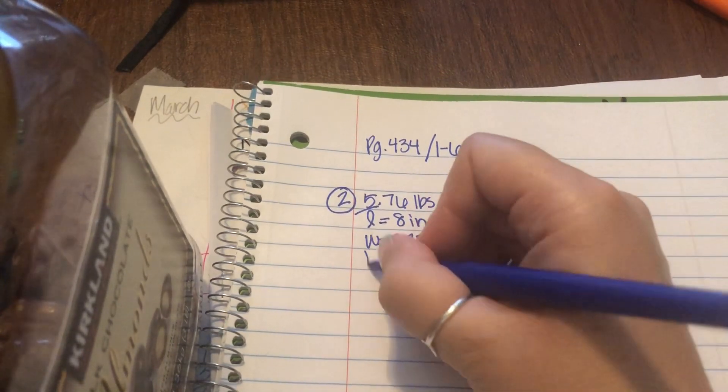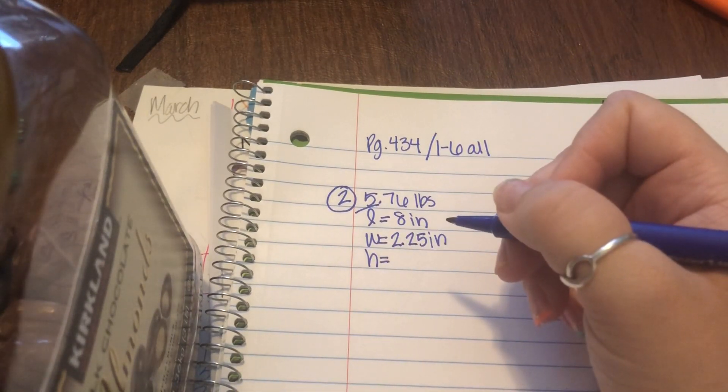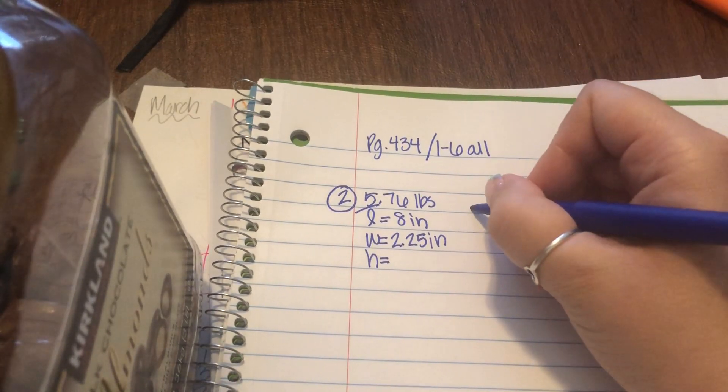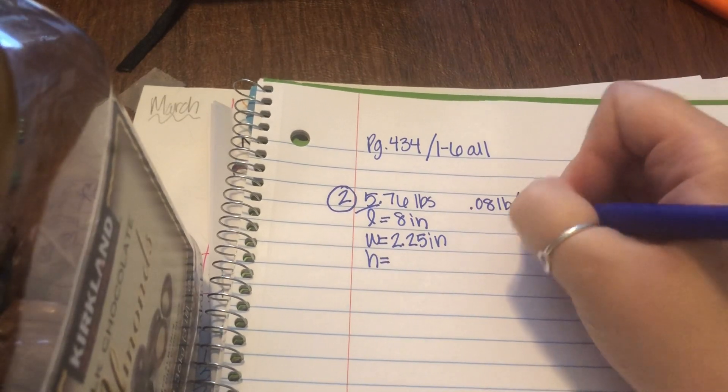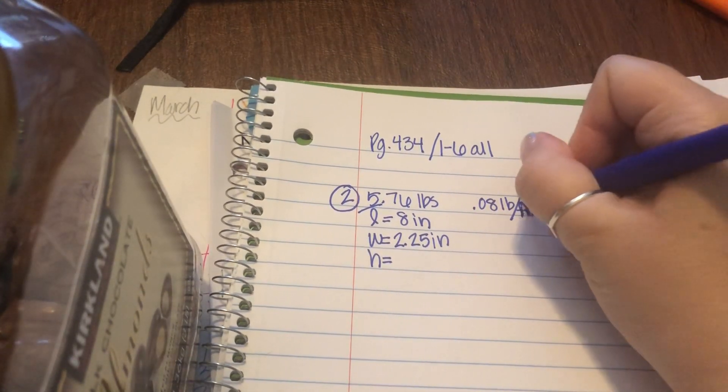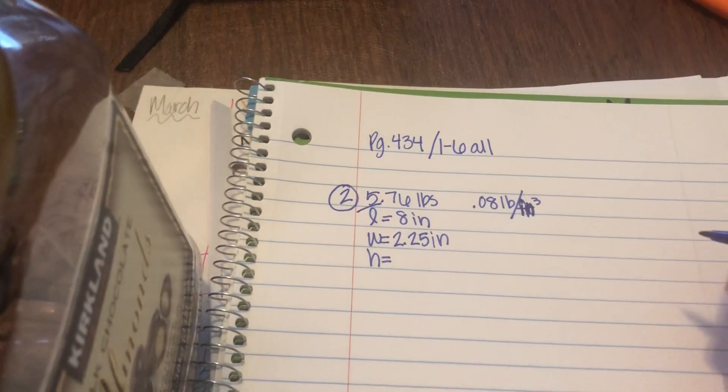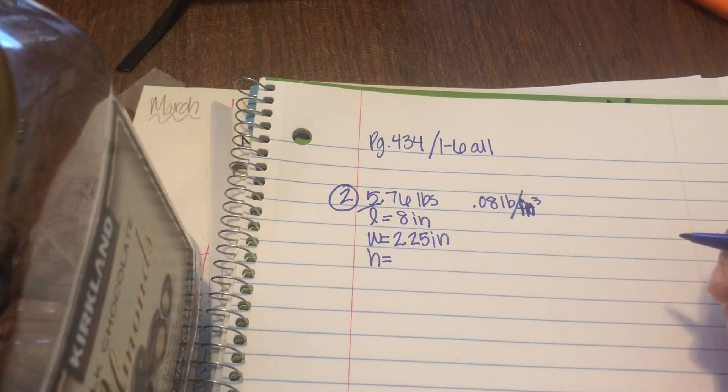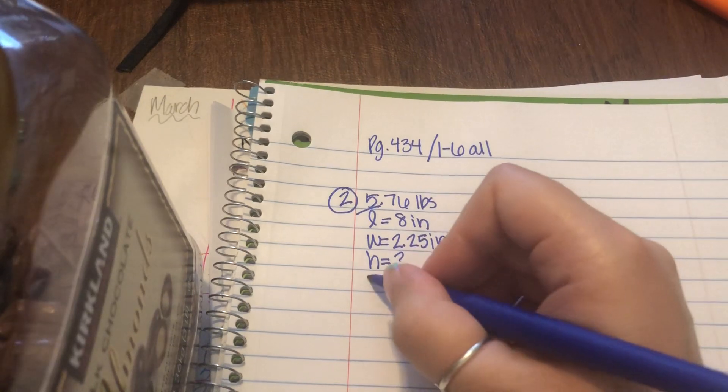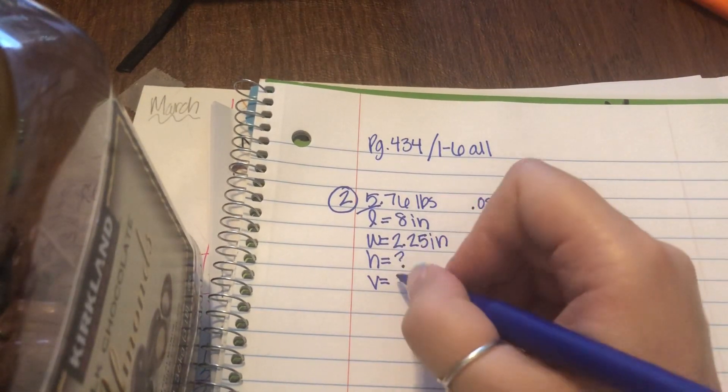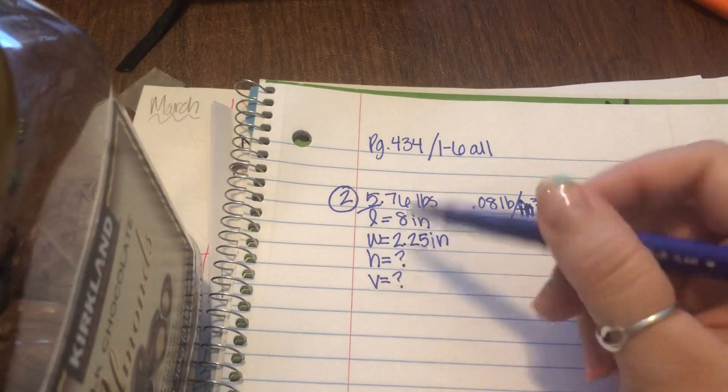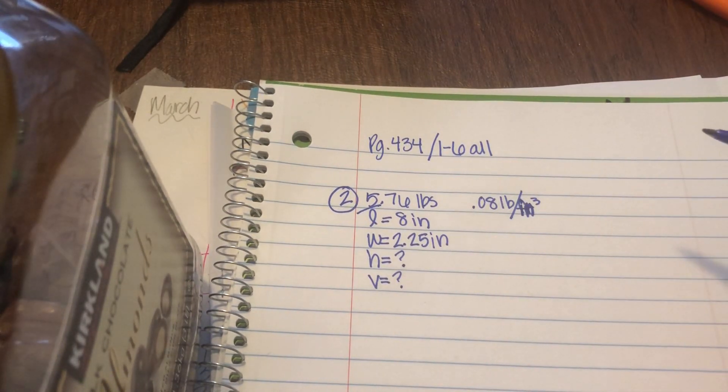The height, I'm just going to write that right now, but it doesn't say anything yet. If the clay weighs 0.08 pounds per cubic inch, so that's 0.08 pounds per cubic inch. Inches cubed is the same thing as cubic inches. What is the volume of the brick? And find the height of the brick. So we don't know the height, and they also want us to find the volume. This piece of information must help me find one of the missing pieces.